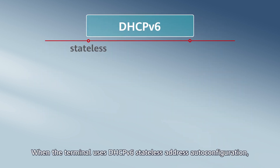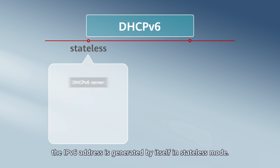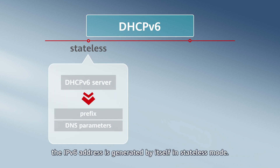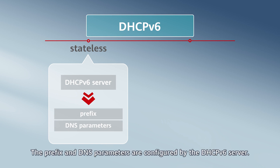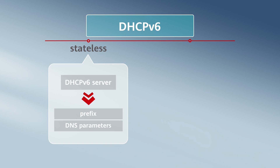When the terminal uses DHCPv6 stateless address autoconfiguration, the IPv6 address is generated by itself in a stateless way. The prefix and DNS parameters are configured by the DHCPv6 server.